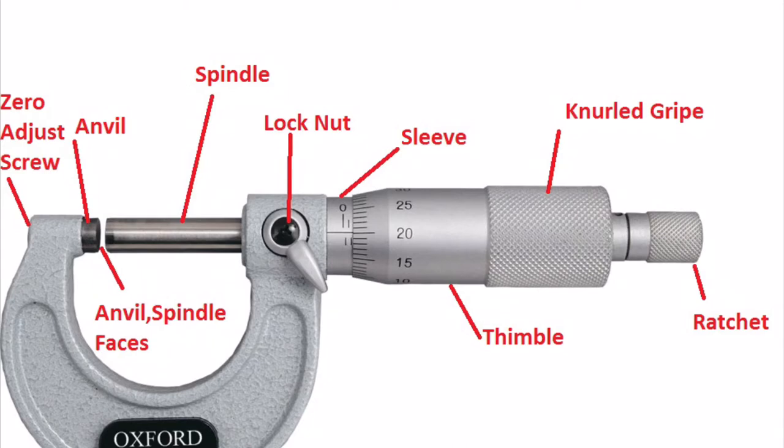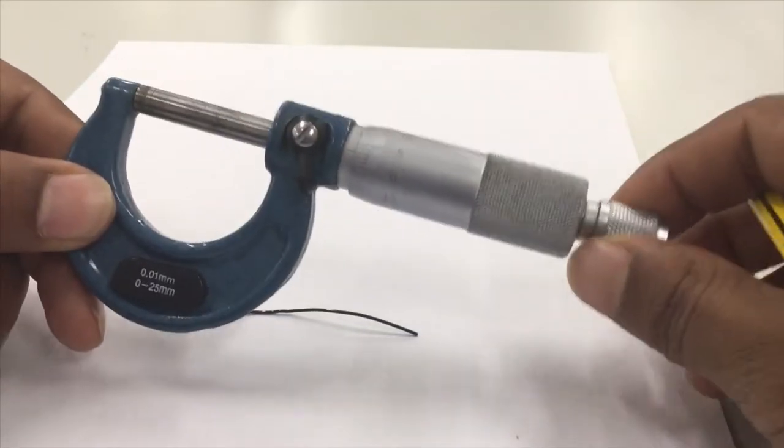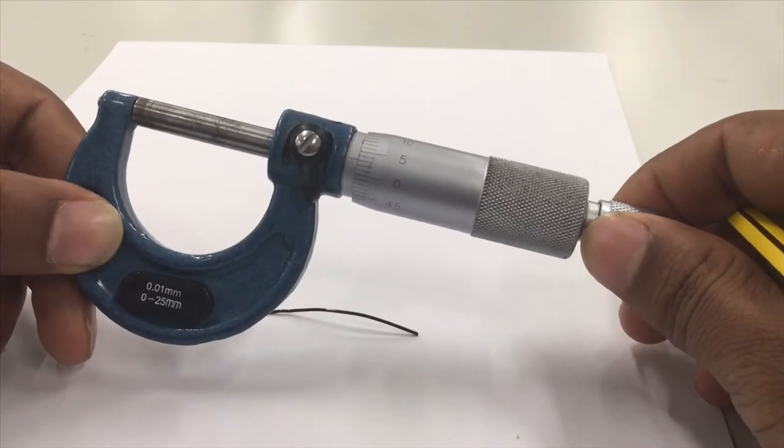Let's go through the parts of the screw gauge here. We can see the parts of the screw gauge. Let us begin with the experiment now. Let's check whether the screw gauge has zero error or not.